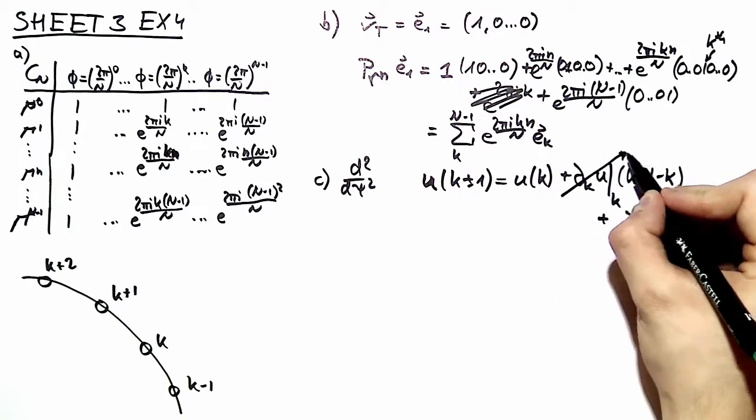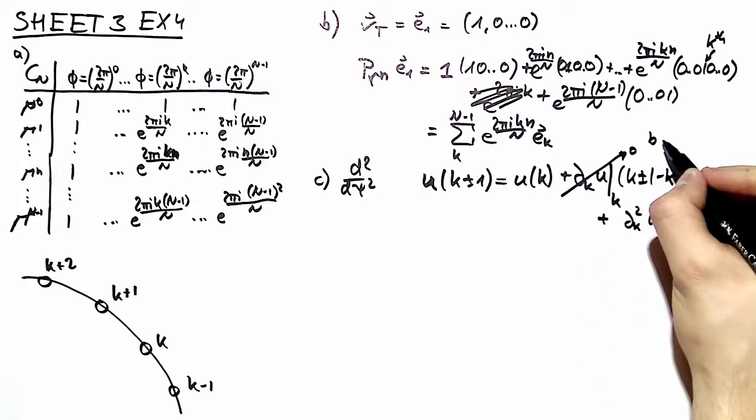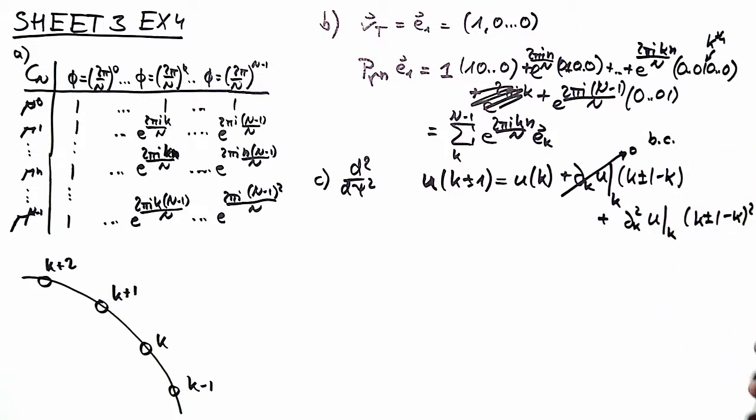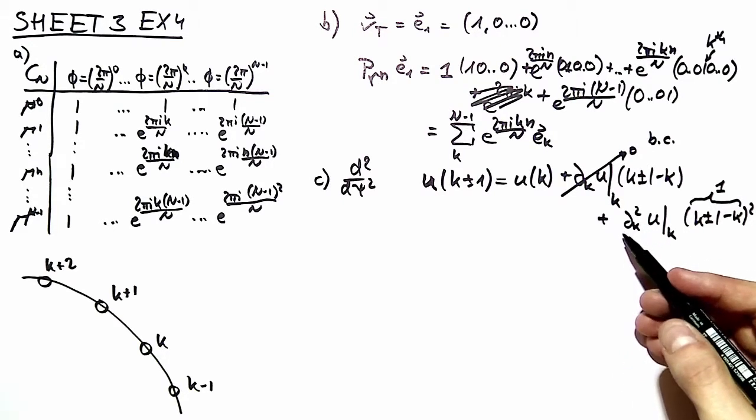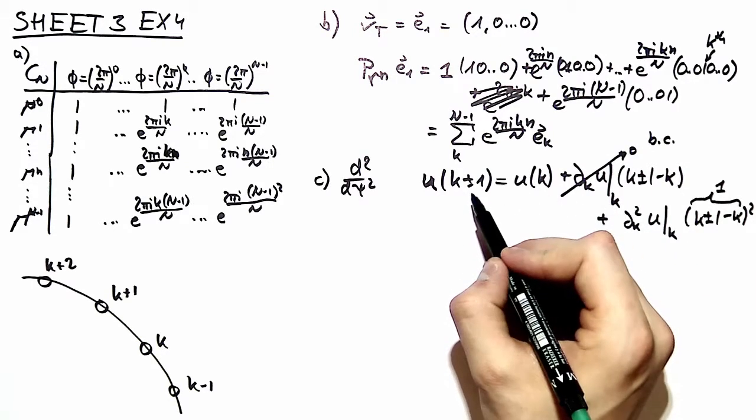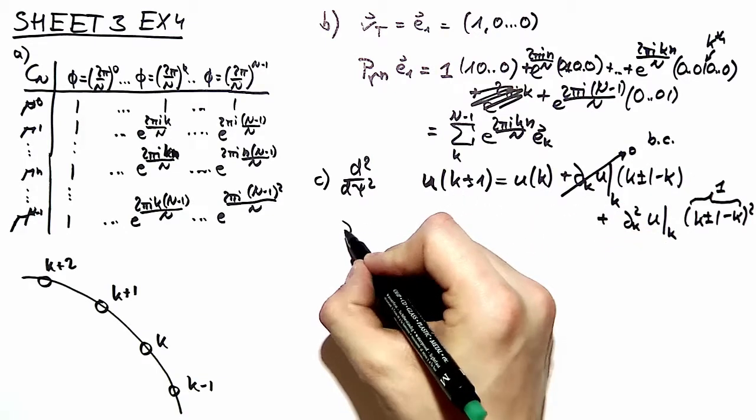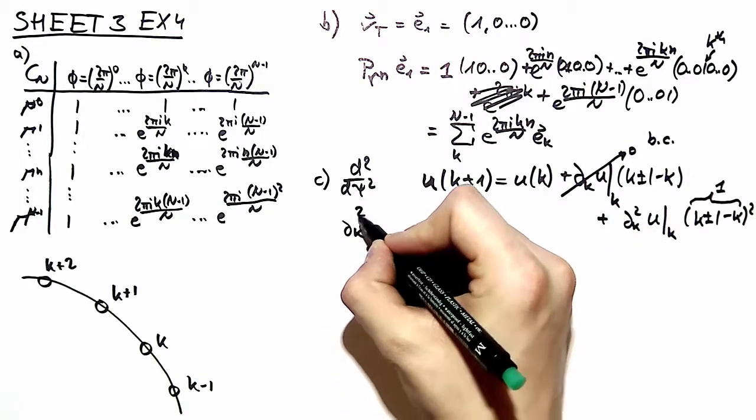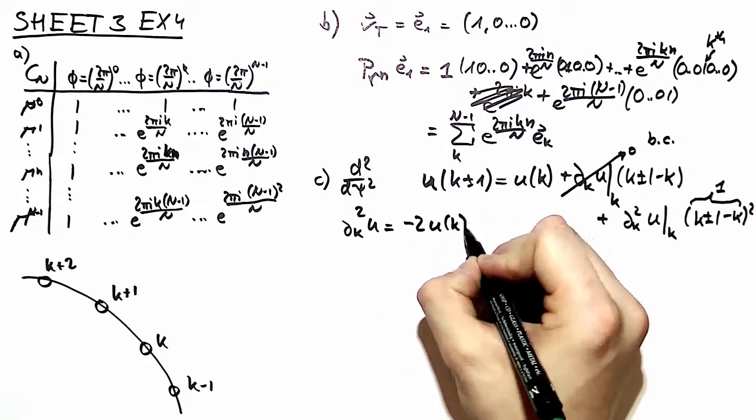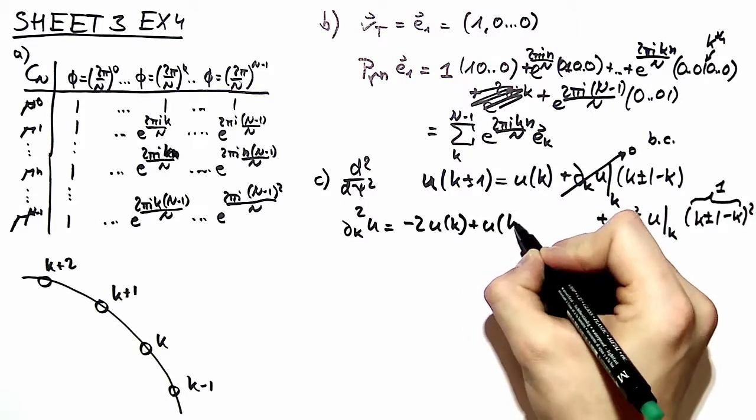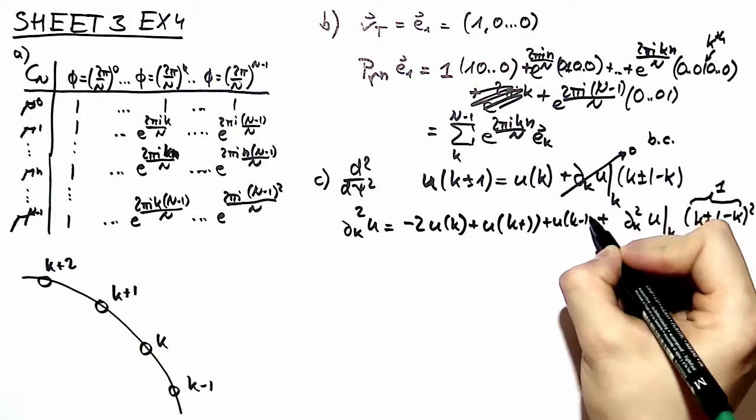This gives 0 because of the boundary condition. And this gives 1 no matter if we have plus or minus here. Now we can write an expression for the second derivative. We take the plus and minus 1 as being equally important and therefore we can write the second derivative of u is equal to minus 2 times u k plus u of k plus 1 plus u of k minus 1.